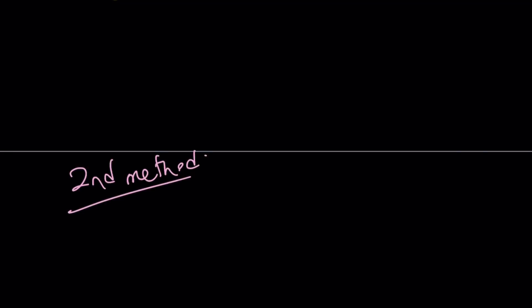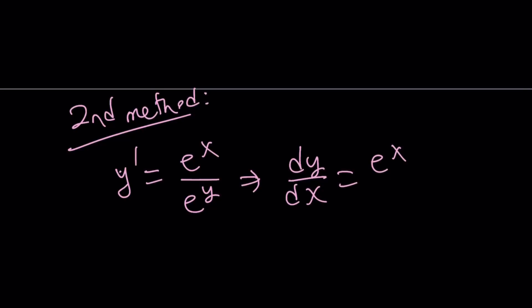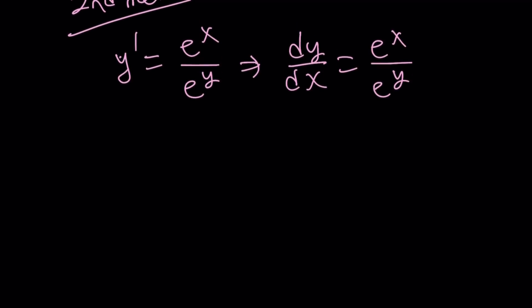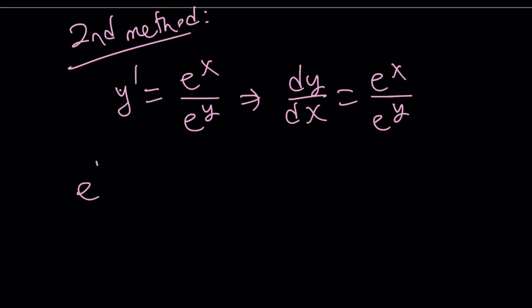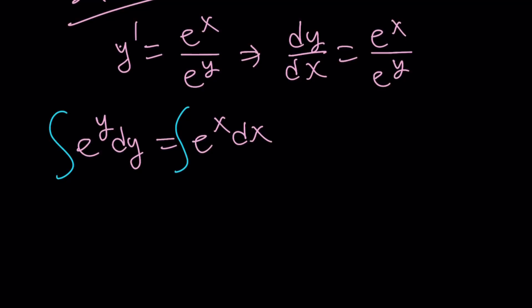Let's leave that and go ahead and talk about the second method. Our second method is basically easier. We're going to write the right-hand side as e to the power x over e to the power y, and write y prime as dy over dx. This is a separable equation again, but obviously easier than the previous method. So let's go ahead and put the y's together: we get e to the power y dy equals e to the power x dx. We can integrate both sides and solve for y.